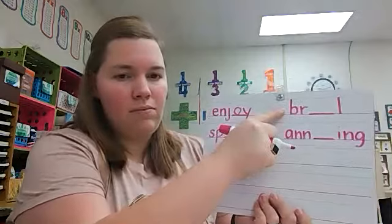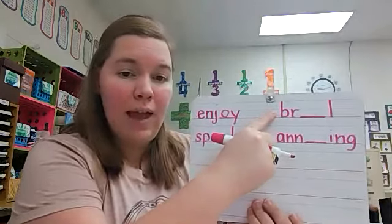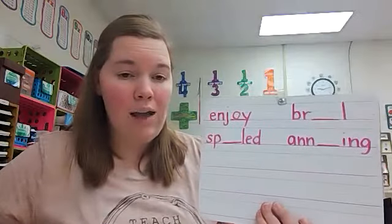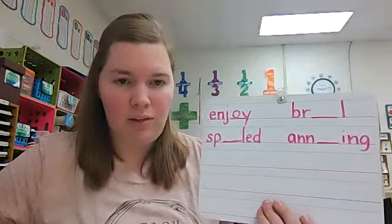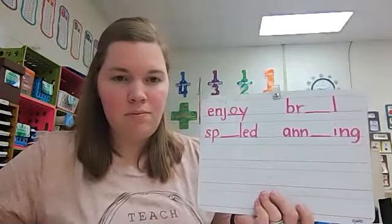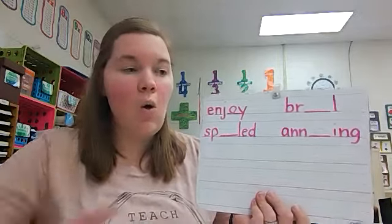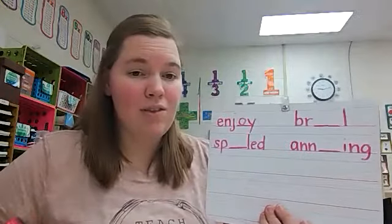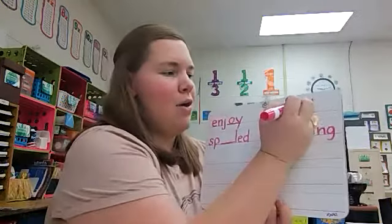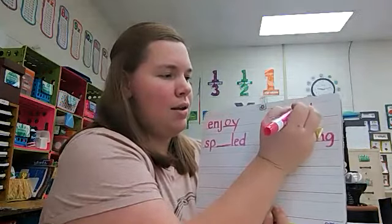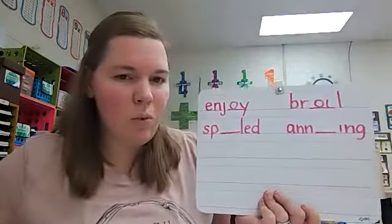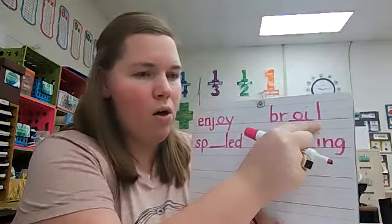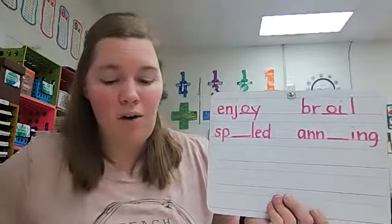Let's try the next one. I want the blank to say oi. Should I use oi or oy to finish spelling the word? Oi is in the medial position — it's in the middle — so we're going to use diphthong oi. Can you try to read this word? This word is broil. Very good.